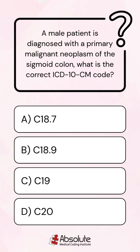A male patient is diagnosed with a primary malignant neoplasm of the sigmoid colon. What is the correct ICD-10-CM code?